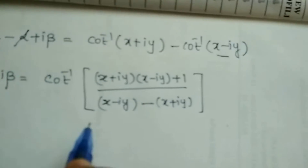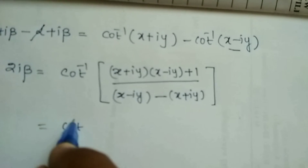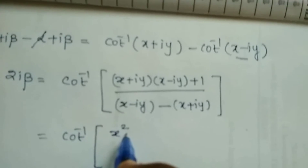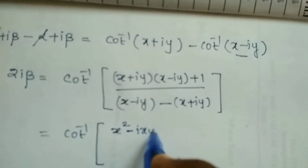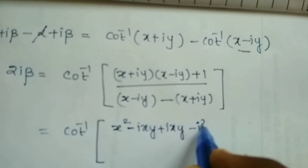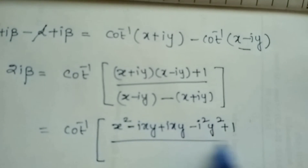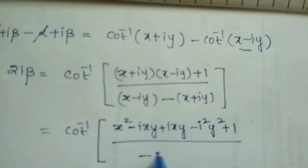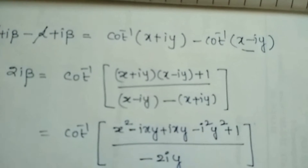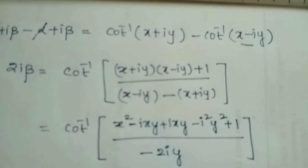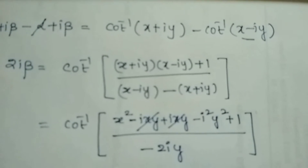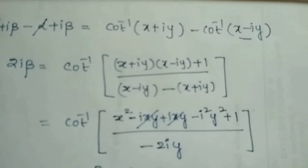Simplifying: x squared minus i x y plus i x y minus i squared y squared plus 1, with the denominator having minus x plus x cancelled, leaving minus 2y. So 2 beta equals cot inverse of x squared plus y squared plus 1, divided by minus 2y.